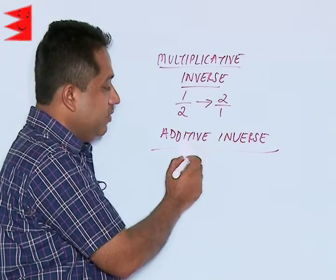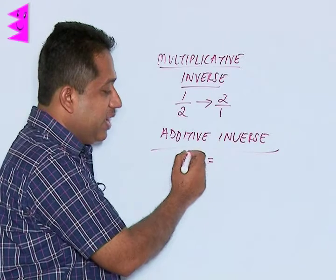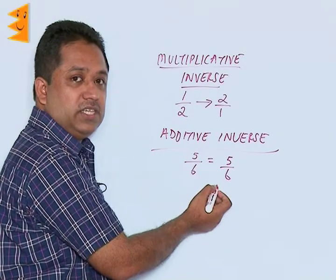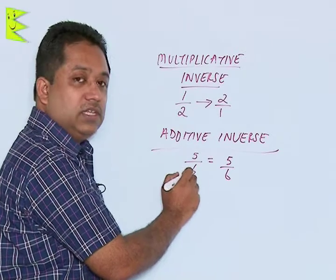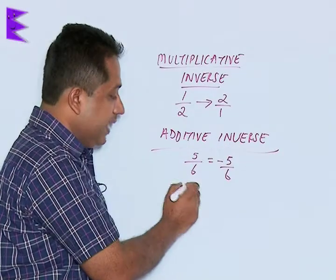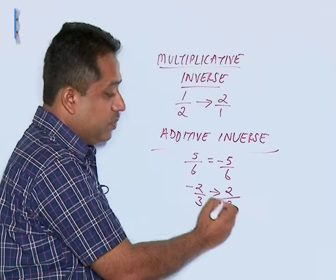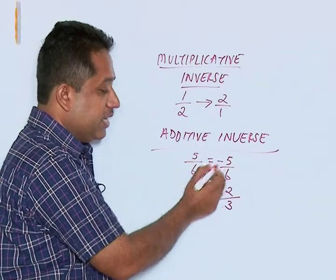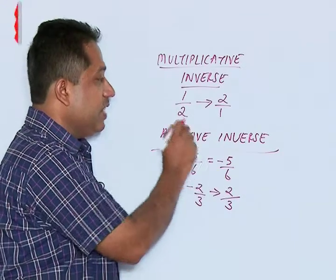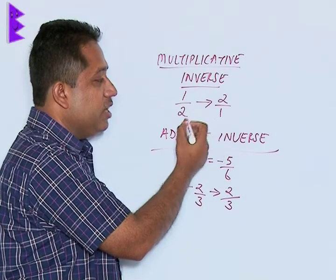What is additive inverse? If you take a number, say 5 upon 6, the additive inverse means no change in numerator and denominator position, but the sign changes. So 5 by 6 becomes negative 5 by 6. If you have a negative number, say minus 2 by 3, then the additive inverse is positive 2 by 3. The positive becomes negative and negative becomes positive, but the numerator and denominator positions do not change. In multiplicative inverse, the signs do not change but the numerator becomes denominator and denominator becomes numerator.